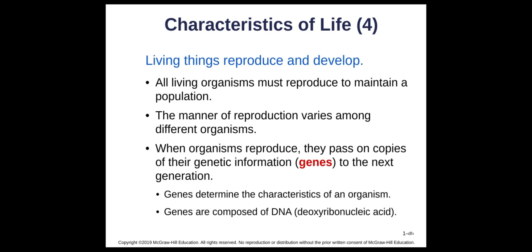Living things are also able to develop and reproduce. All living organisms have to reproduce in order to maintain their population. The manner of reproduction varies — some reproduce asexually, some sexually, some can do both. The main thing organisms are doing when they reproduce is passing on their genetic information. We call those genes — they're coded on DNA — to the next generation. Genes determine the characteristics of an organism and are coded on DNA, which stands for deoxyribonucleic acid.